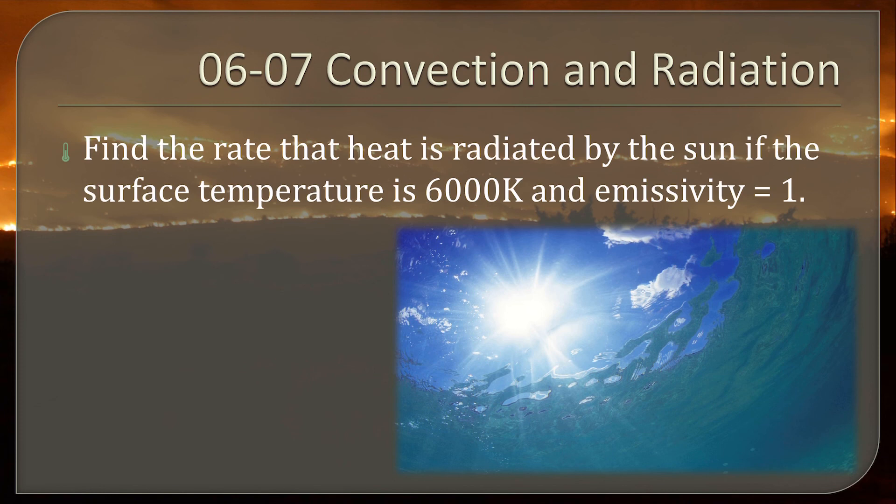So find the rate that heat is radiated by the sun if the surface temperature is 6,000 Kelvin and its emissivity is 1, meaning it is a perfect black body. You say, but it's not black. That just means that it absorbs and emits heat or radiation perfectly. So Q over T equals sigma E A. Now, we have to worry about is this the net transfer or just from how much is transferred out from the sun. It is not net. It is just the transfer out from the sun. So we just say T to the fourth.